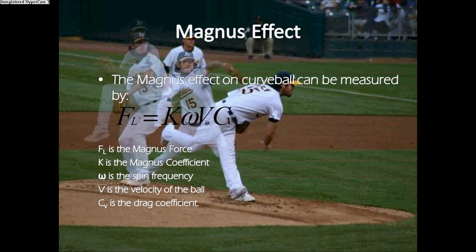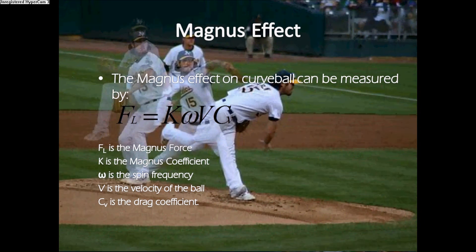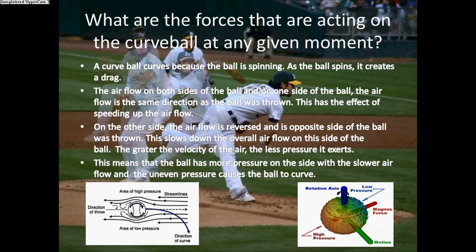The Magnus effect on the curveball can be measured by the formula shown. The question becomes: what are the forces acting on the curveball at any given moment? The ball is spinning, which creates drag. The airflow on one side of the ball will flow in the same direction as the ball is thrown. On the other side, the airflow will reverse and flow the opposite direction. This creates high pressure on one side and low pressure on the other, causing the ball to curve.